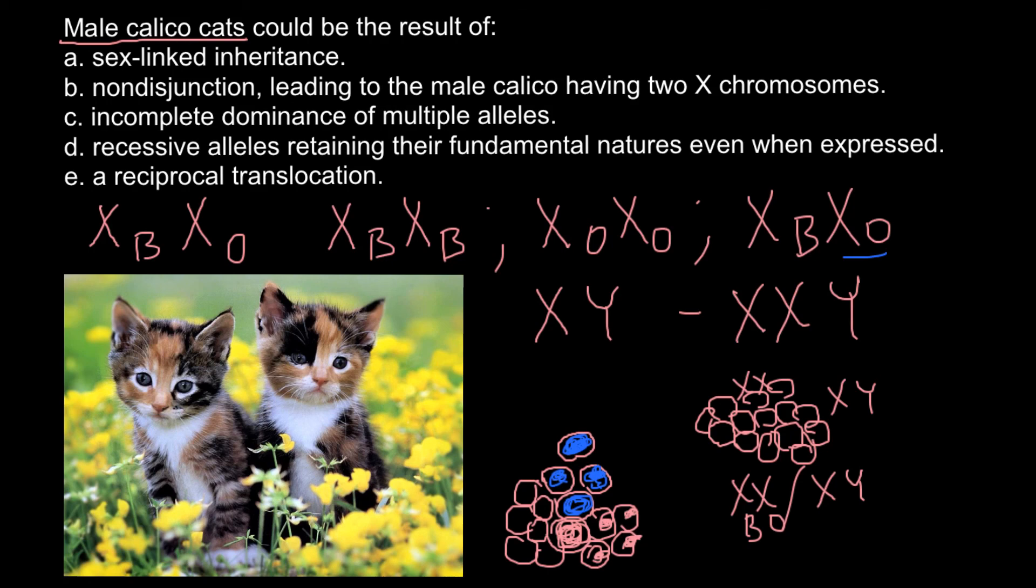So, now you can choose the correct answer. And answer A, sex link inheritance is the correct answer. But it doesn't explain male calico cats. And only answer B explains that due to non-disjunction leading to the male calico cats having two X chromosomes, such a color pattern might happen in male cats.